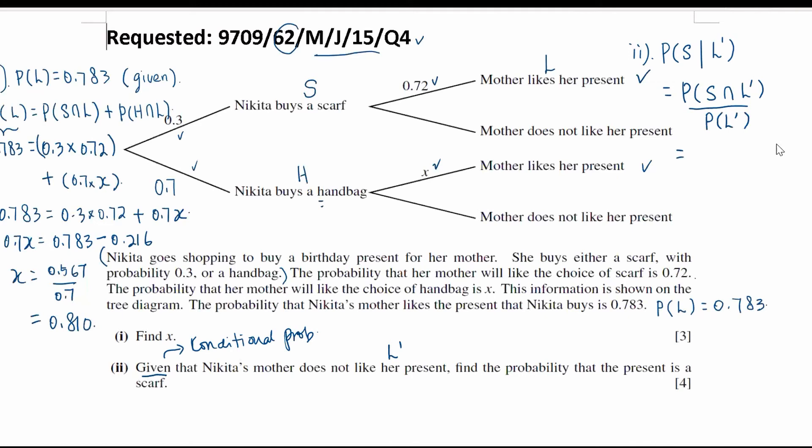We have the probability that she buys a scarf which is 0.3 and her mother does not like it. From the tree diagram given, 0.72 that her mother likes it, then that means 0.28 the mother does not like it. So 0.28, divided by the probability that her mother does not like her present.